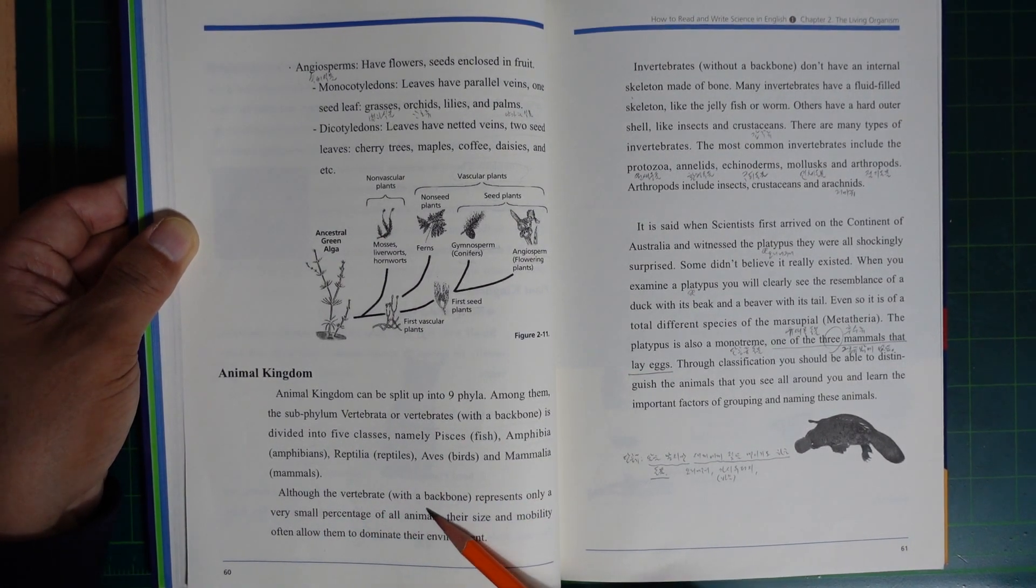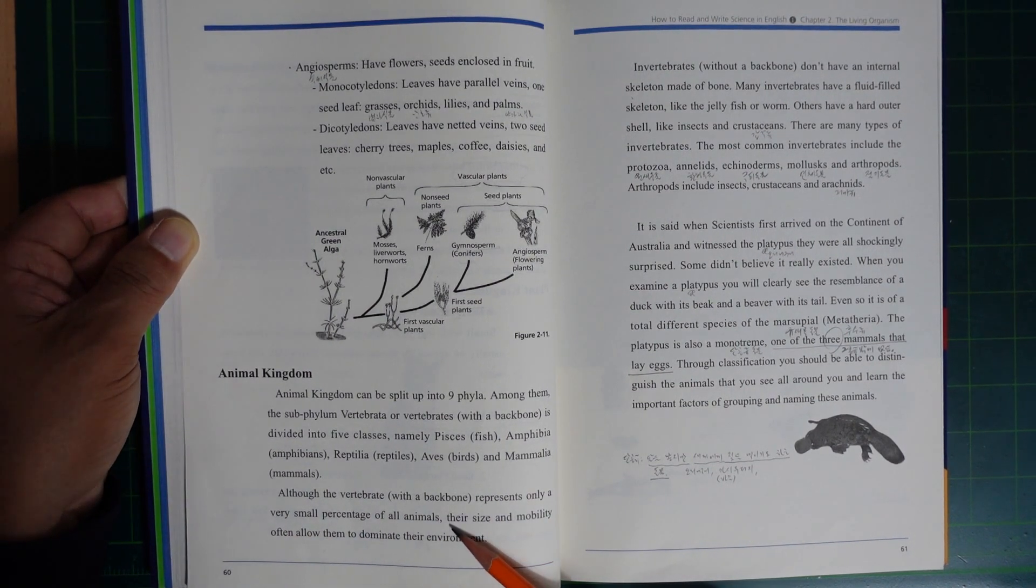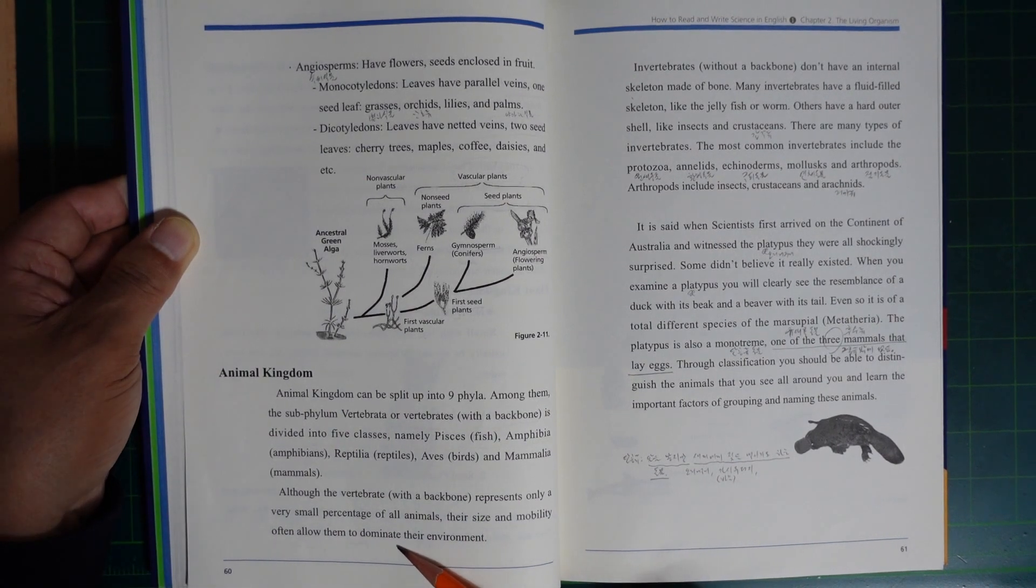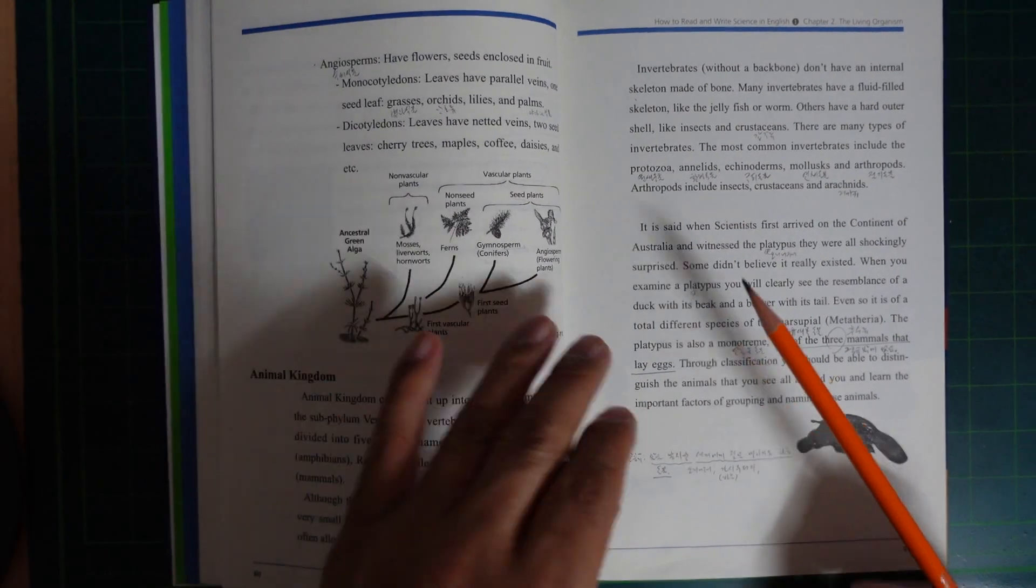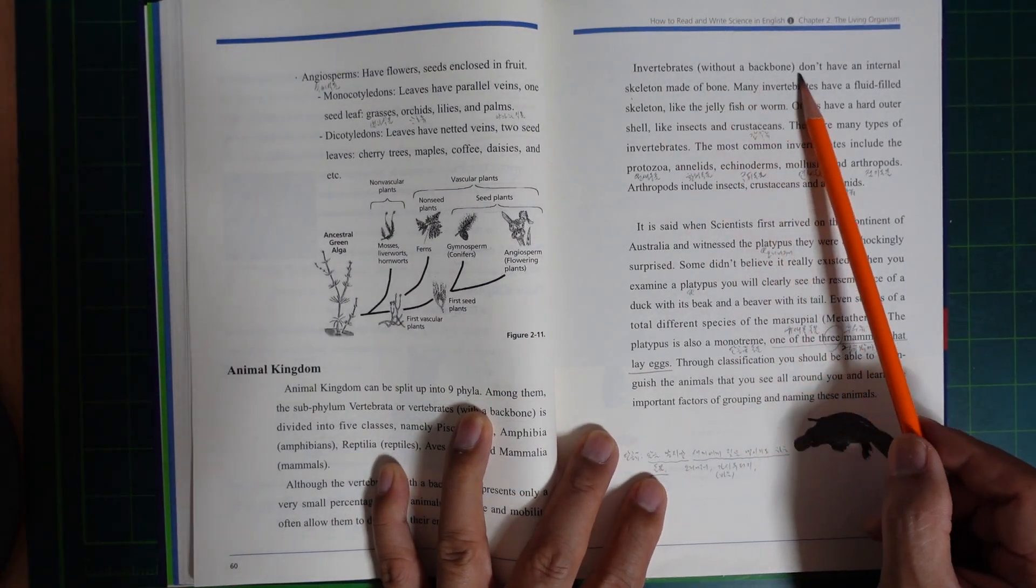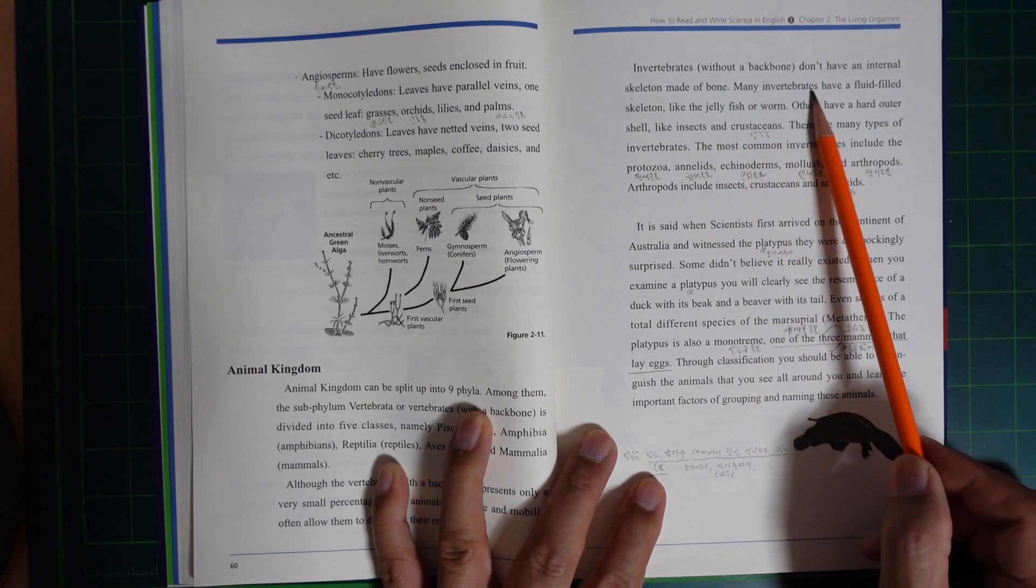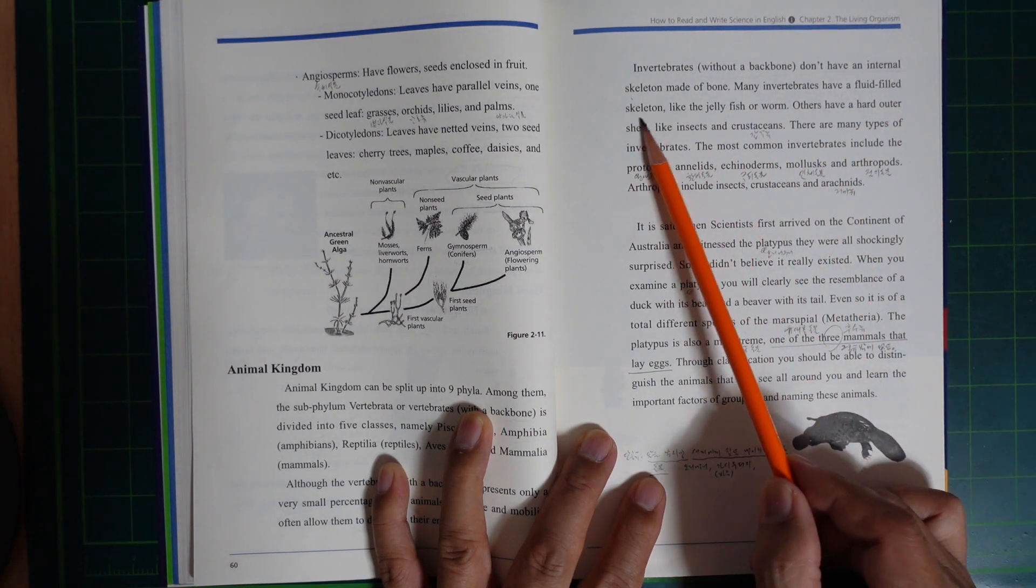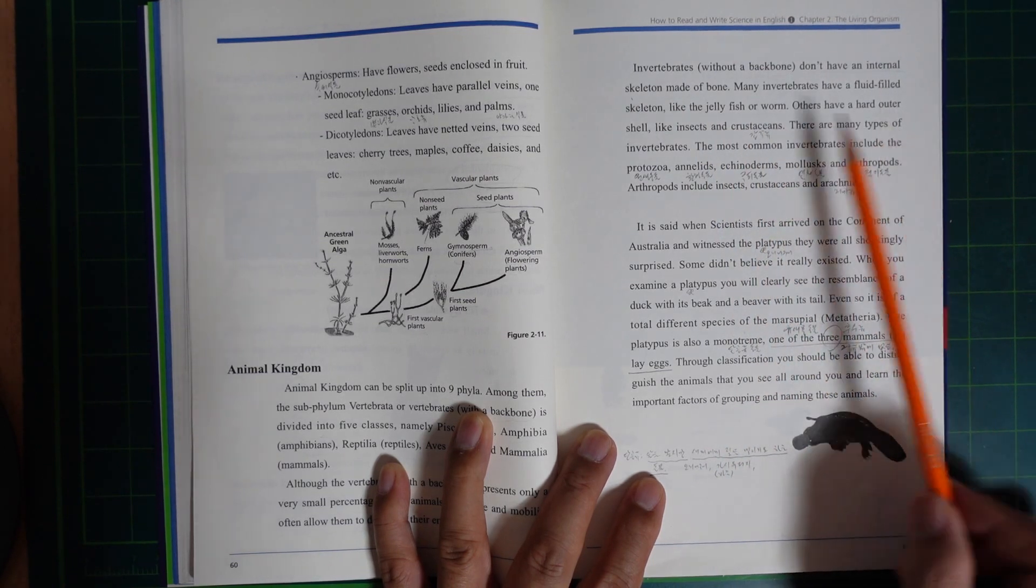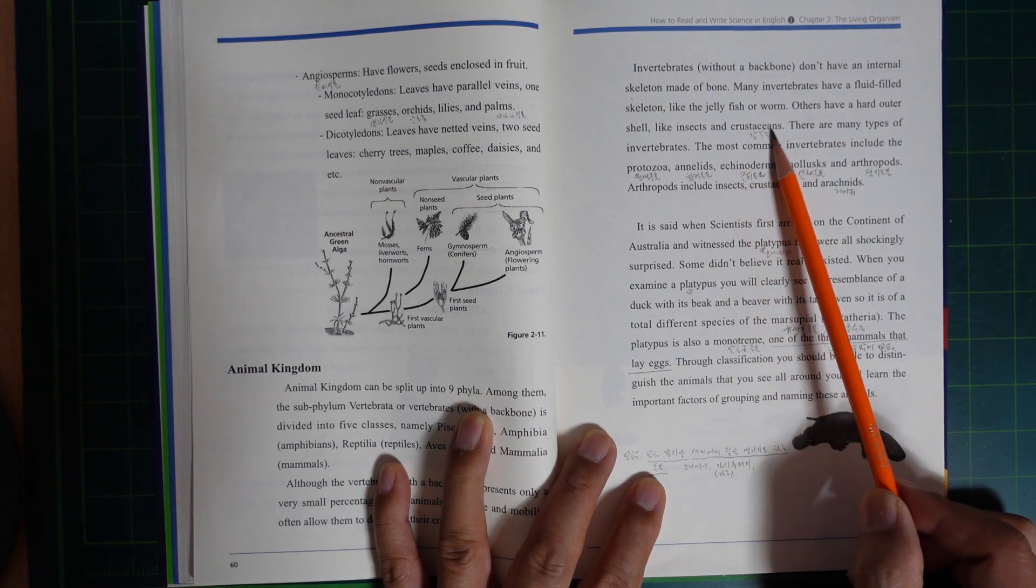Although the vertebrates with backbones represent only a very small percent of all animals, their size and mobility often allow them to dominate their environment. Invertebrates, those without backbones, don't have internal skeletons made of bone. Many invertebrates have a fluid-filled skeleton like the jellyfish and worm.